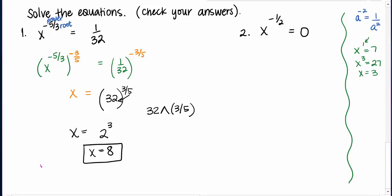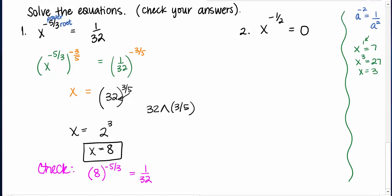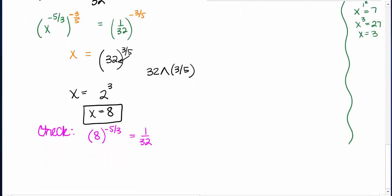And then our check we'll do down here looks something like if x was 8, 8 to the negative 5 thirds would be my very original statement and I'm saying that that should be 1 over 32. Certainly again this is something that we could put in our calculators. If we wanted to verify this by hand however I would just look at it and say the negative exponent is going to reciprocate my base.